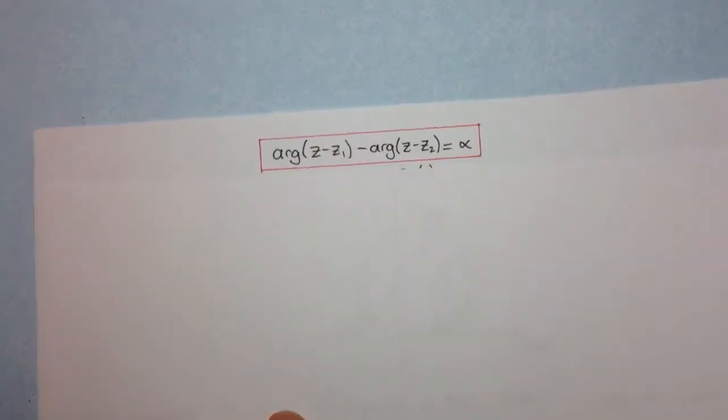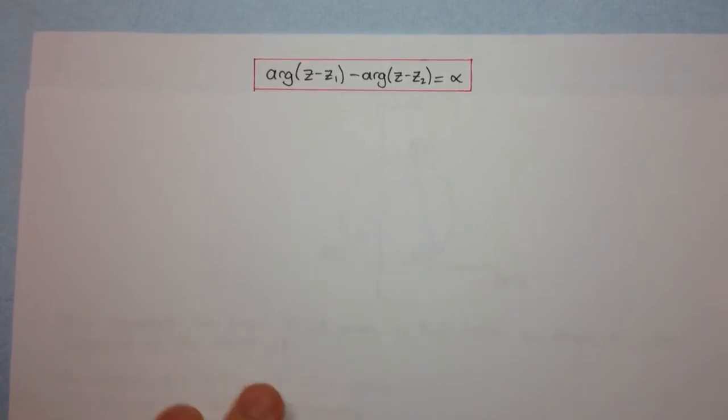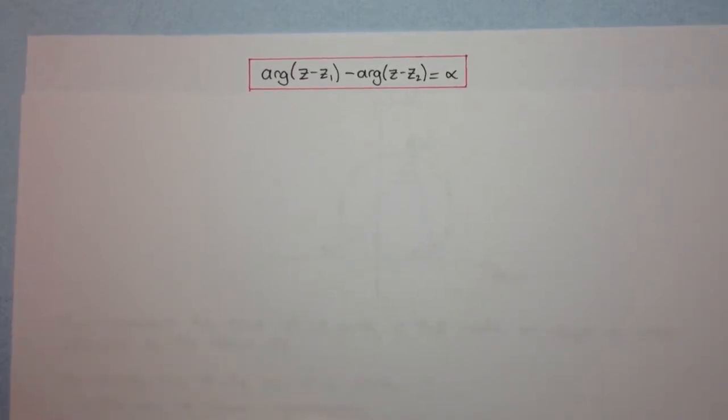So there's two more standard forms that we should look at. Alright, now those first three are quite common, and you see them often enough. And if you have a fairly decent understanding of complex numbers, then you should be able to recognize exactly what they represent geometrically. Let's have a look at two that are slightly different.